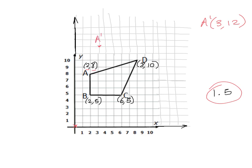And we do the same thing for B. B prime is 3 because that's 1.5 times 2 here. And 1.5 times 5 is 7.5. So our new B is at 3, 7.5. So that is up here.